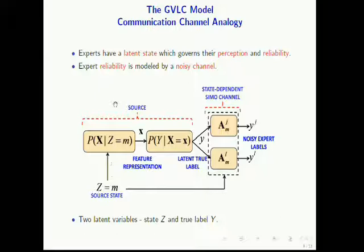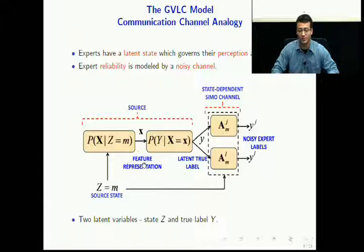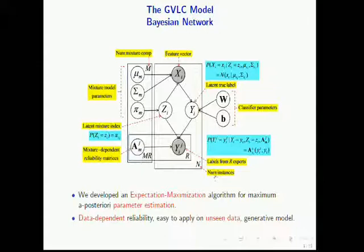We use these observations to give each expert a latent state which governs their perception and reliability. Expert reliability is then modeled by a noisy channel, and this leads to the following communication channel analogy for our model. We have a source state, and this source state generates the feature representation used by the expert, which in turn generates the true latent label. This true latent label then passes through a communication channel corresponding to the distortion introduced by the experts, and we get the multiple noisy labels. There are two latent variables in this model: the state and the true label.